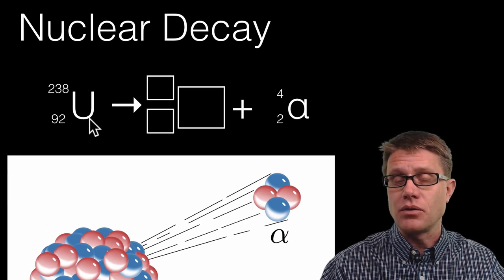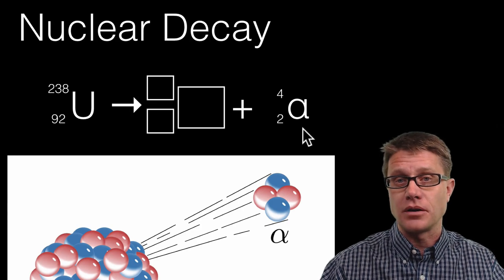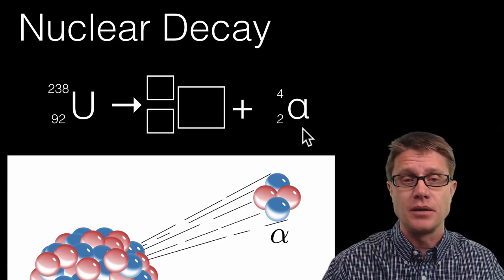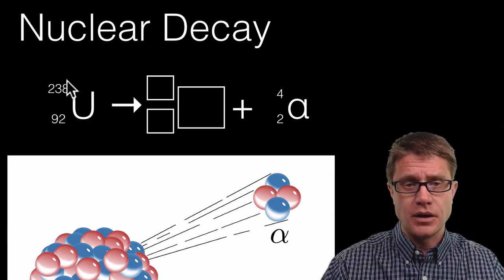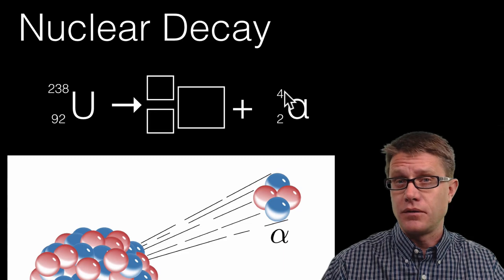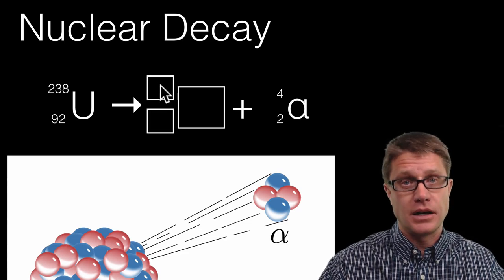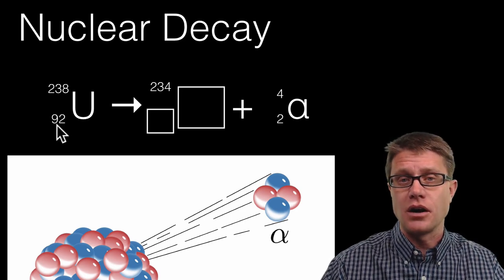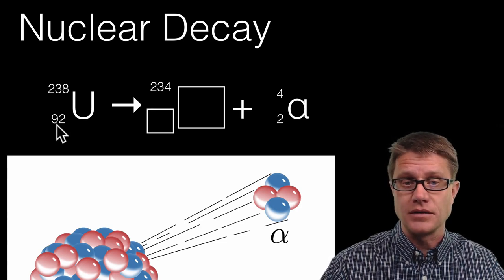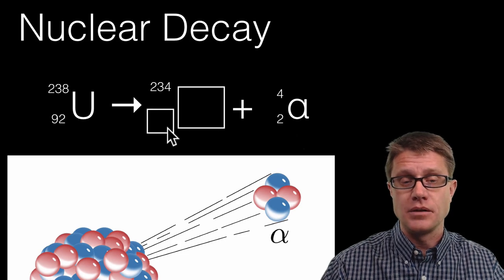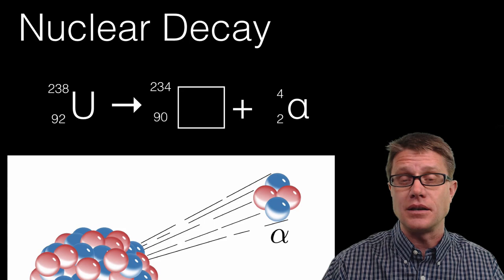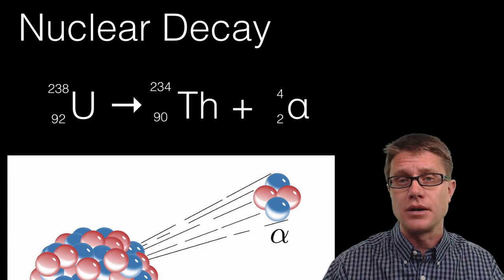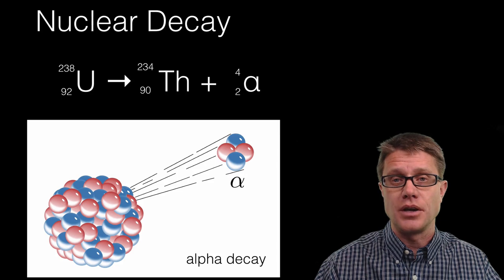On the left side we have uranium-238 undergoing alpha decay, giving off an alpha particle on the right side. Working backwards, we can find what atom is created. For the mass number: on the left we have 238; on the right we have 4 plus what is in the box. By conservation of mass, that is 234. For charge: on the left we have 92+; on the right we have 2+, so by conservation of charge the unknown atom has a charge of 90+. With 90 protons we know it is thorium-234. So that is alpha decay of uranium-238.